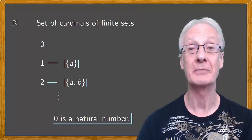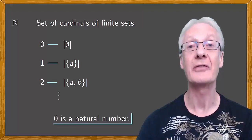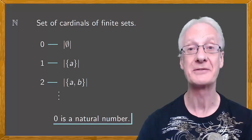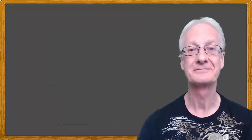By this definition, zero is also a natural number because it's the cardinal of the empty set, the set that has no members.